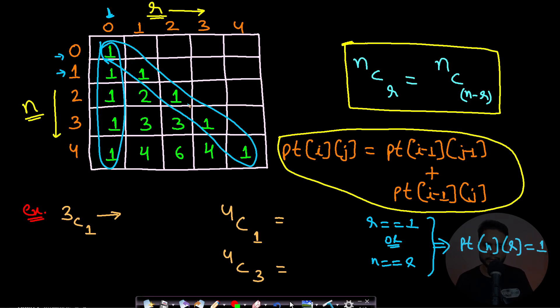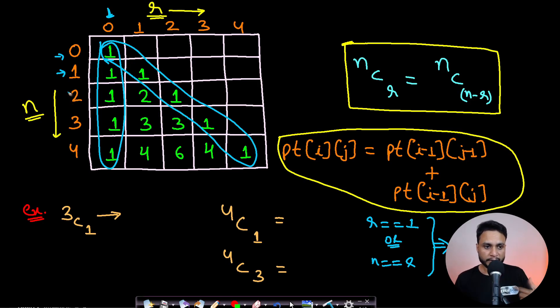For all the non-boundary elements, we have to iterate from row number two and go till n. For these non-boundary elements, this two will be the sum of two numbers—this two is the sum of one and one, this three is the sum of one and two, this three is the sum of two and one.